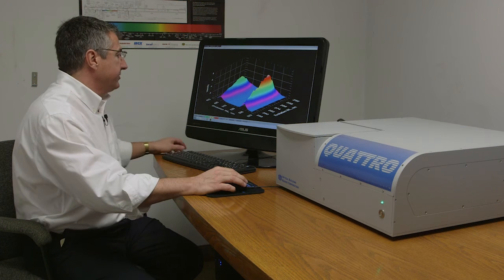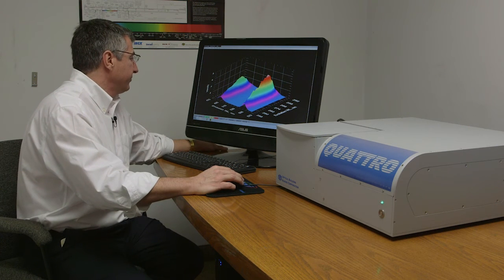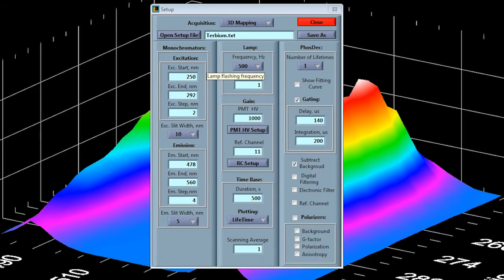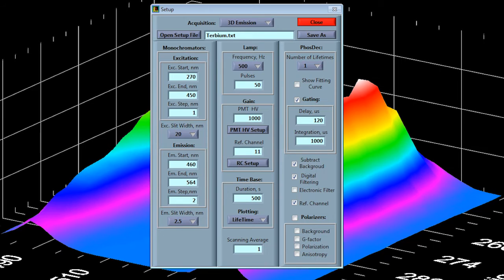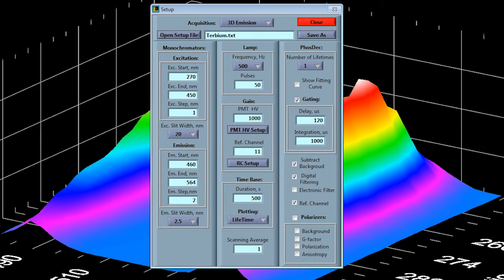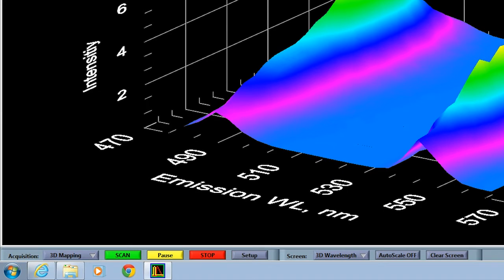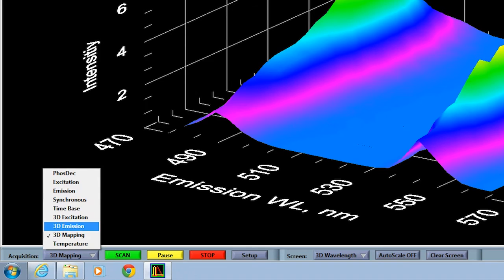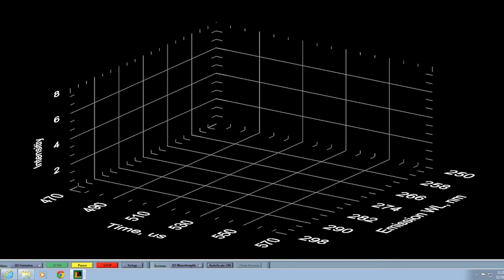And so we're going to do an acquisition now, in this case where we adjust the setup parameters, not to do a 3D mapping, but to do what we call 3D emission, where we are assuming now we're scanning the emission monochromator and we're going to collect versus phosphorescence decay on the microsecond timescale. So we set up the parameters for this particular protocol, close the setup button, we're now going to select 3D emission as our acquisition choice and just simply hit scan.